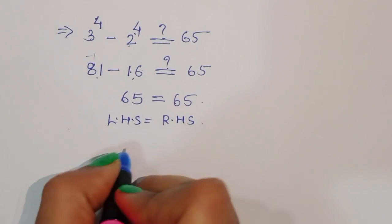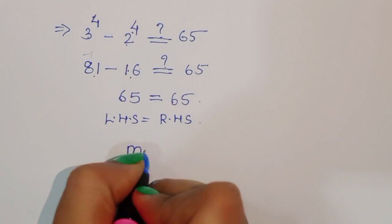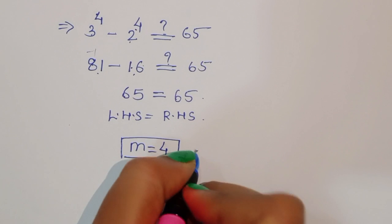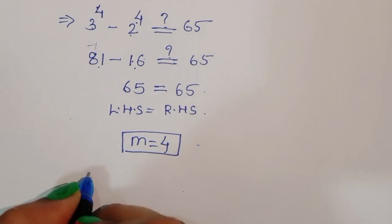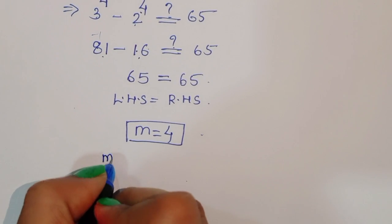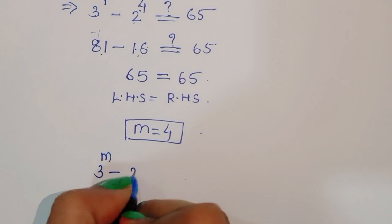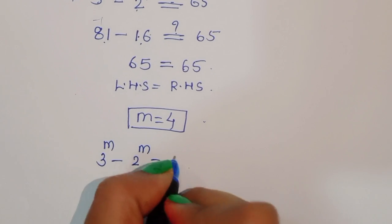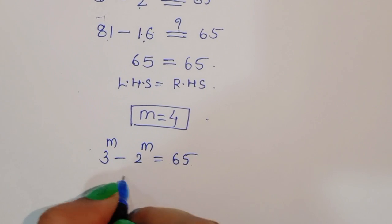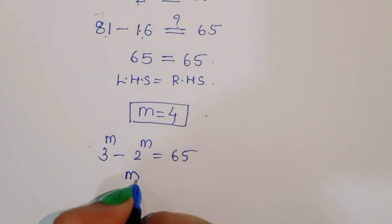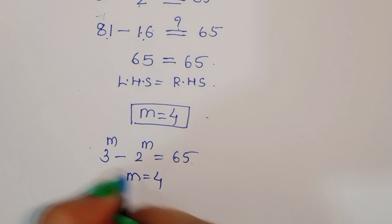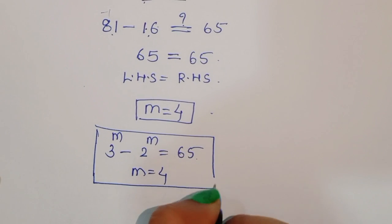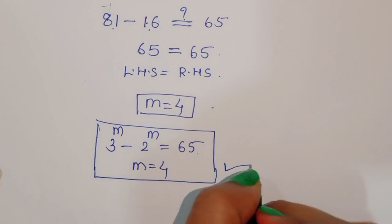So the value of m is equal to 4. This is the correct solution. We can say: 3 power m minus 2 power m is equal to 65, and in this, m is equal to 4. This is the correct solution. Thank you.